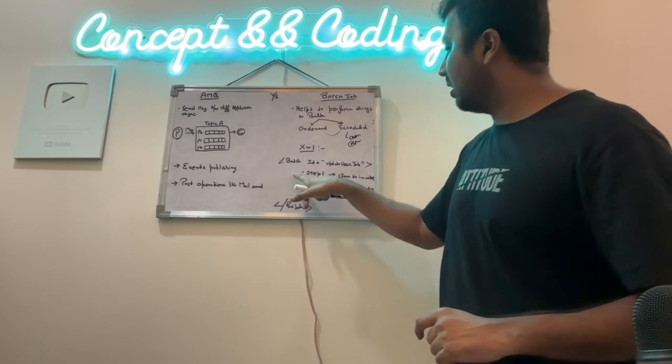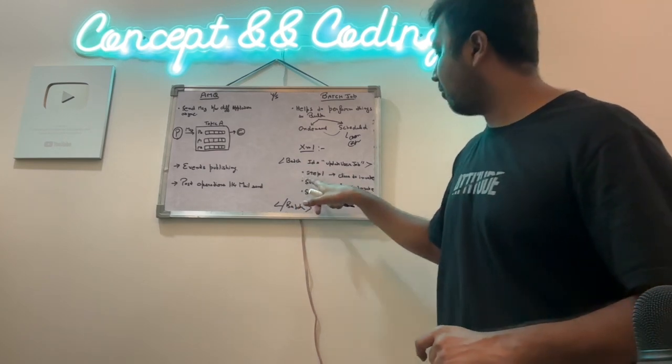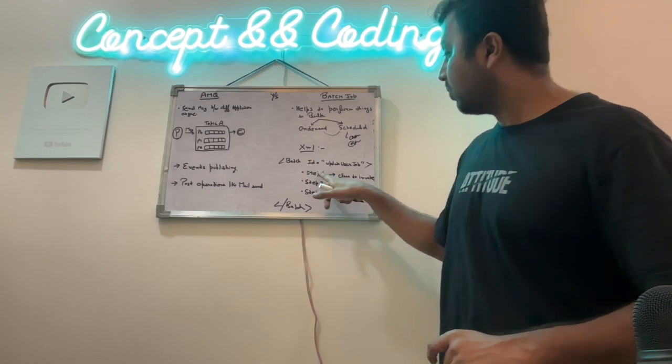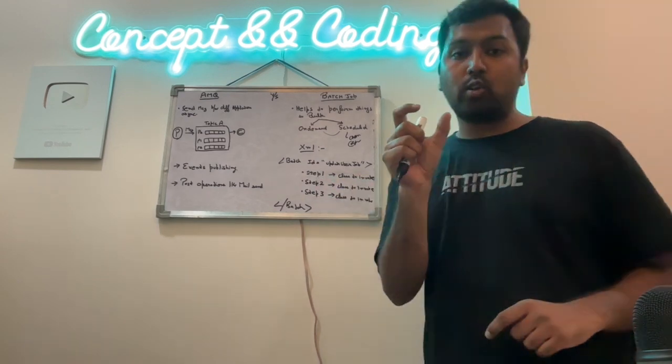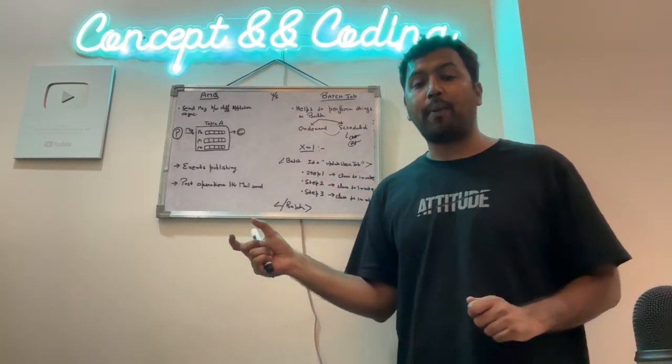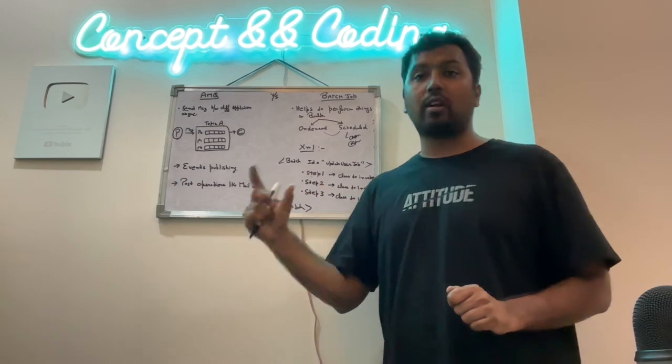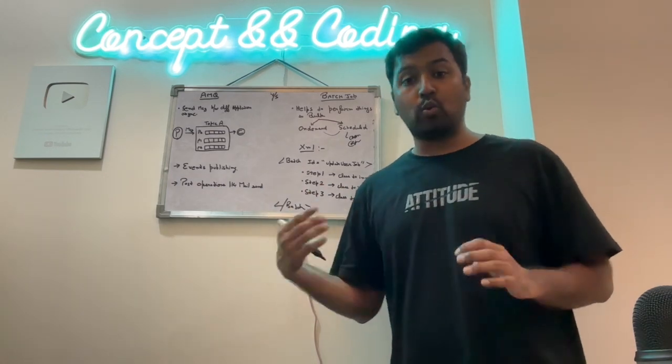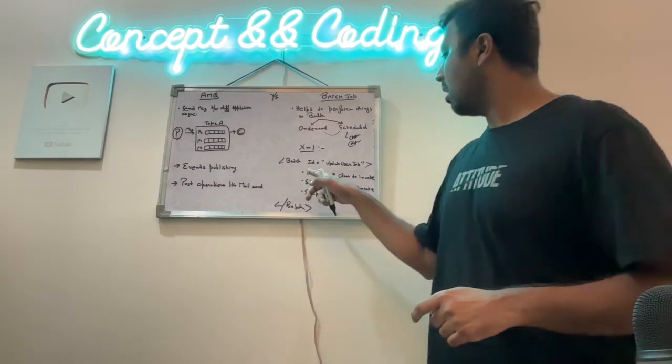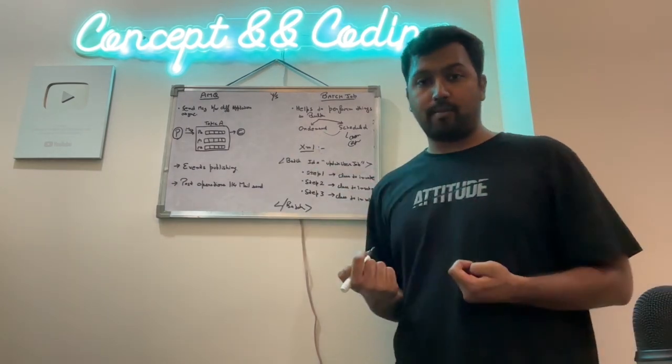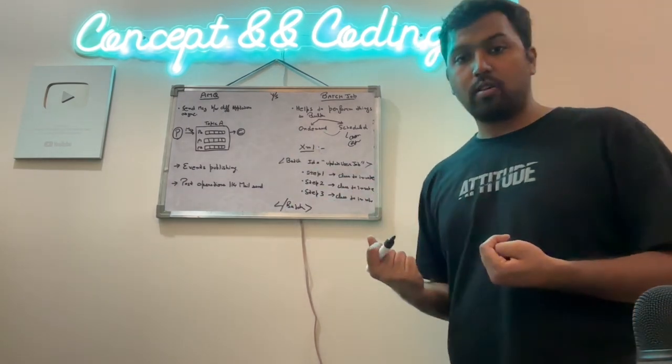And then in this, we can provide multiple steps like step 1, step 2, step 3. Each step corresponding to a particular operation or you can say that particular class. In that class, you can do particular operation. Let's say step 1 is that, read the file or download the file.